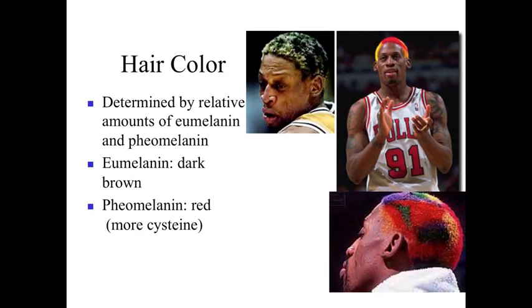Natural hair color is determined by pigments similar to those involved in skin coloring. With hair, eumelanin gives a dark brown appearance, while pheomelanin is a reddish form of melanin due to the presence of more cysteine. The relationship between these pigments, or their absence, contributes to natural hair color.